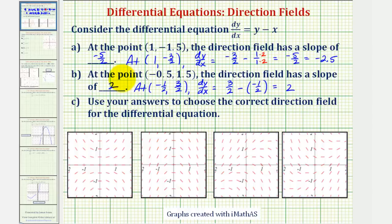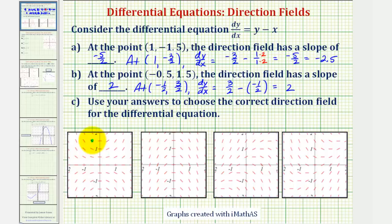Now we want to use the answers from part a and b to choose the correct direction field for the differential equation. For every point on our direction fields, the slope of the segments would represent the slope of the tangent lines, and therefore the value of the derivative function at that point. So looking back at part b, let's find the point (-0.5, 1.5) on all four graphs.